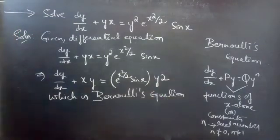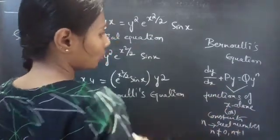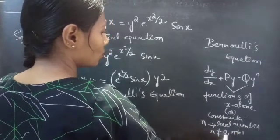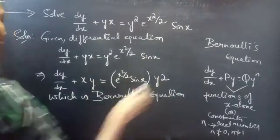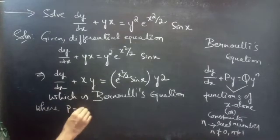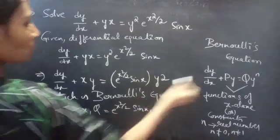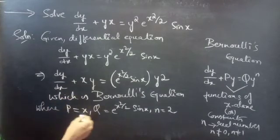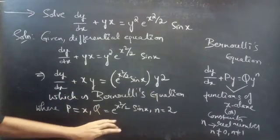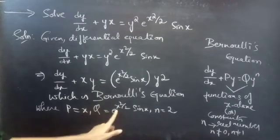By comparing these two equations, we'll get P and Q. Here P and Q are either functions of x alone or constants, and n is a real number such that n ≠ 0 and n ≠ 1. By comparing, we get P = x, Q = e^(x²/2)·sin x, and comparing y² with y^n gives n = 2. P and Q involve only x, so we can say that P and Q are functions of x alone, since no other variable is involved.